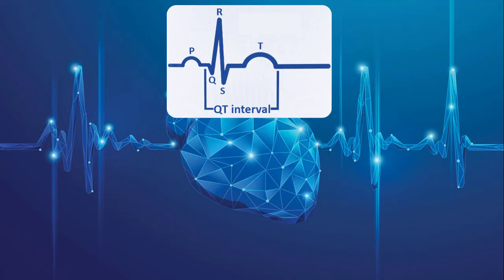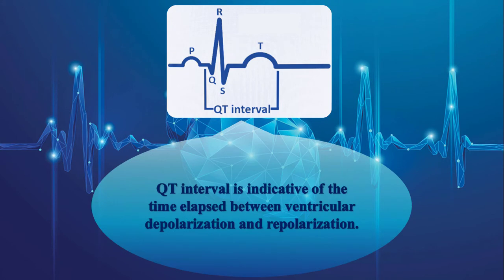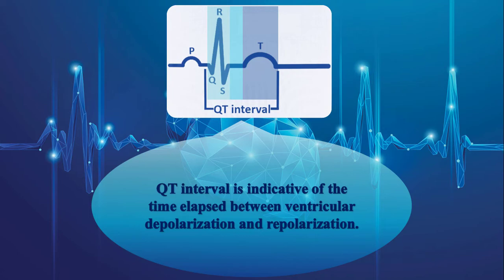QT interval is a key part of the electrocardiogram. It is indicative of the time elapsed between ventricular depolarization and repolarization. QT interval includes the QRS complex, ST segment, and T waves. Therefore, it extends from the very beginning of the QRS complex to the end of the T waves.